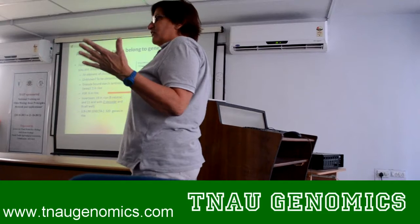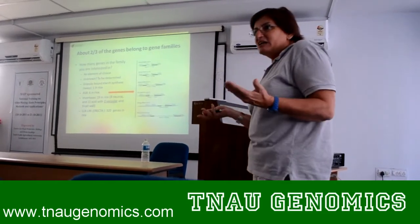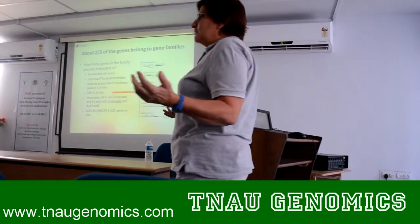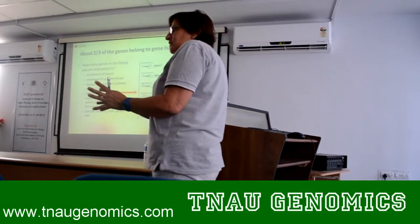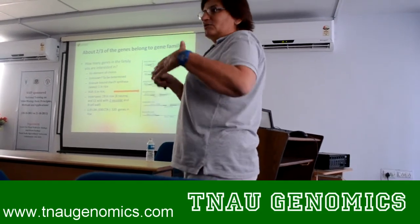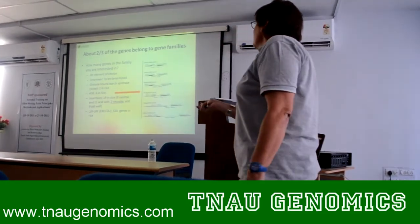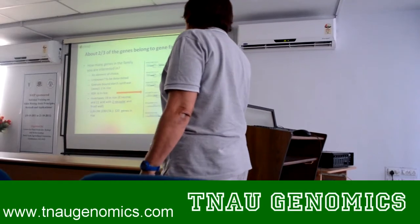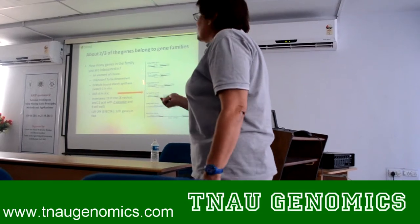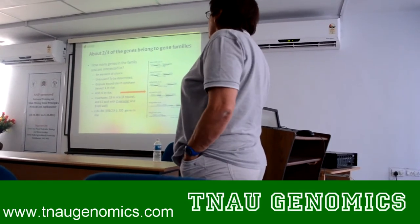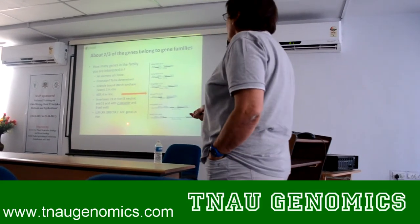Why do we have gene families? Because plant evolutionary history is a story of duplication — genome duplication as well as tandem duplication. This means we end up with sets of genes resulting from duplication that have evolved since the duplication event. They have similarity but are not all identical, and generally within a gene family they do not all have the same function.